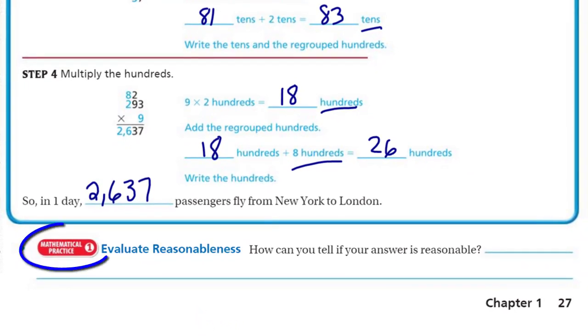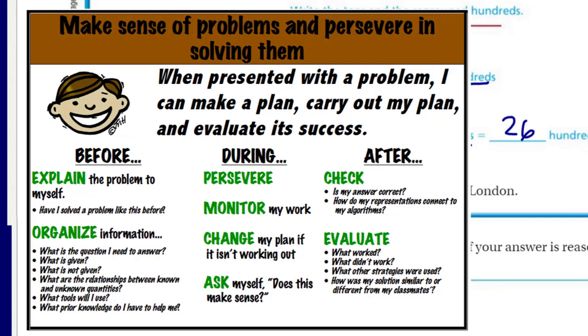But then we come down here, and this is Mathematical Practice 1. Here's Mathematical Practice 1. It states, make sense of problems and persevere in solving them. And it does say, when presented with a problem, I can make a plan, carry out my plan, and evaluate its success. It's just kind of like that before, during, and after. You explain the problem to myself, helping you understand the problem. During, it looks like you're going to persevere, monitor your work as you're going. Then after, that comes into the reasonableness of answer. Is my answer correct? How do I know? Thank you, Mathematical Practice 1. Time for you to go.